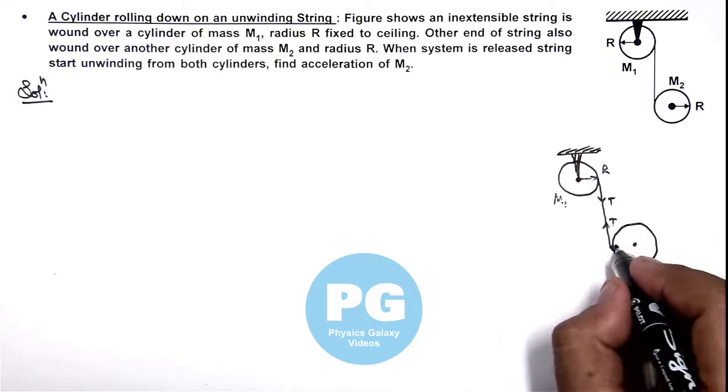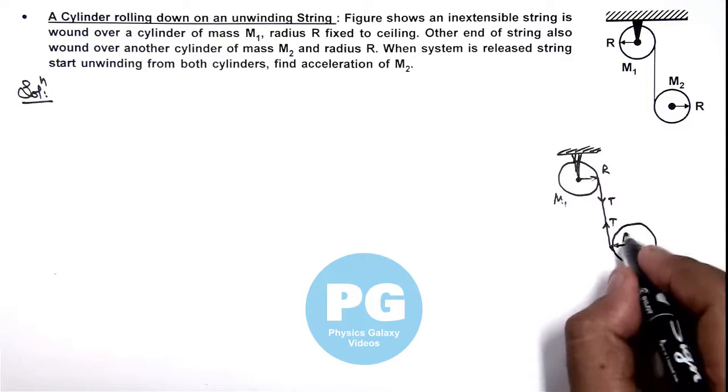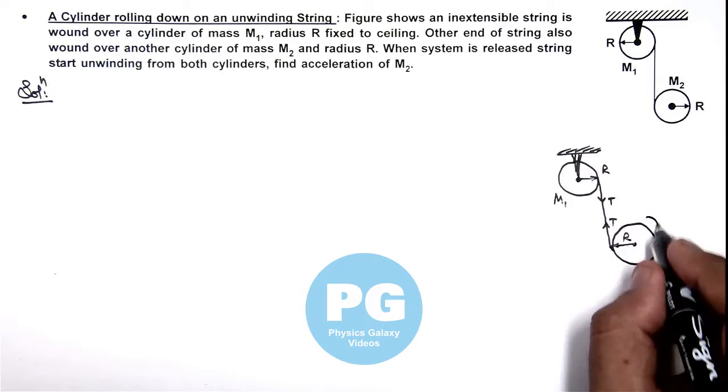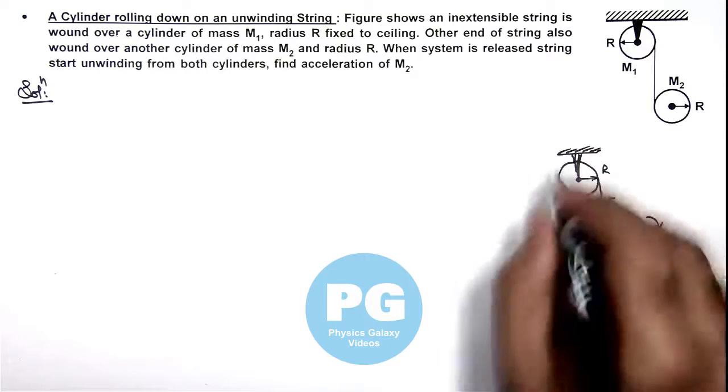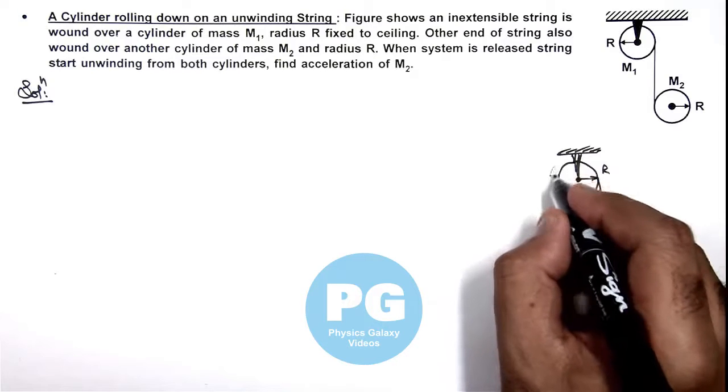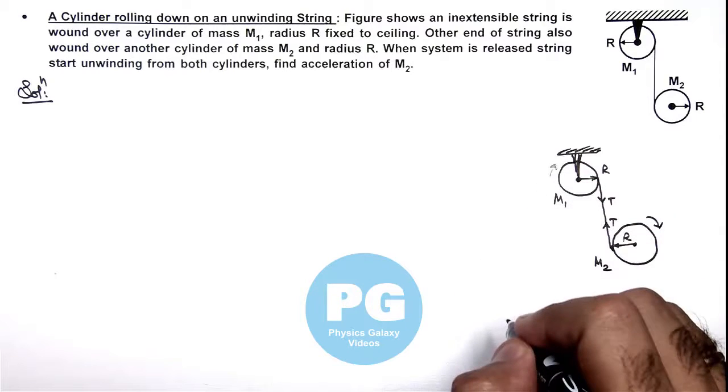For the other cylinder also, the rotation is caused by the torque of tension. Its mass is m2 as the masses are different. Their moment of inertia will also be different.